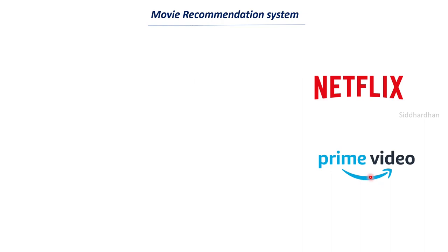Most of us are familiar with OTT platforms like Netflix, Prime Video, Hotstar, etc. In recent years these platforms have been used extensively. The main reason is these platforms know what kind of movies and series each user likes. They analyze the user's watching pattern and try to recommend movies accordingly. The main reason behind this is they have their own recommendation systems.